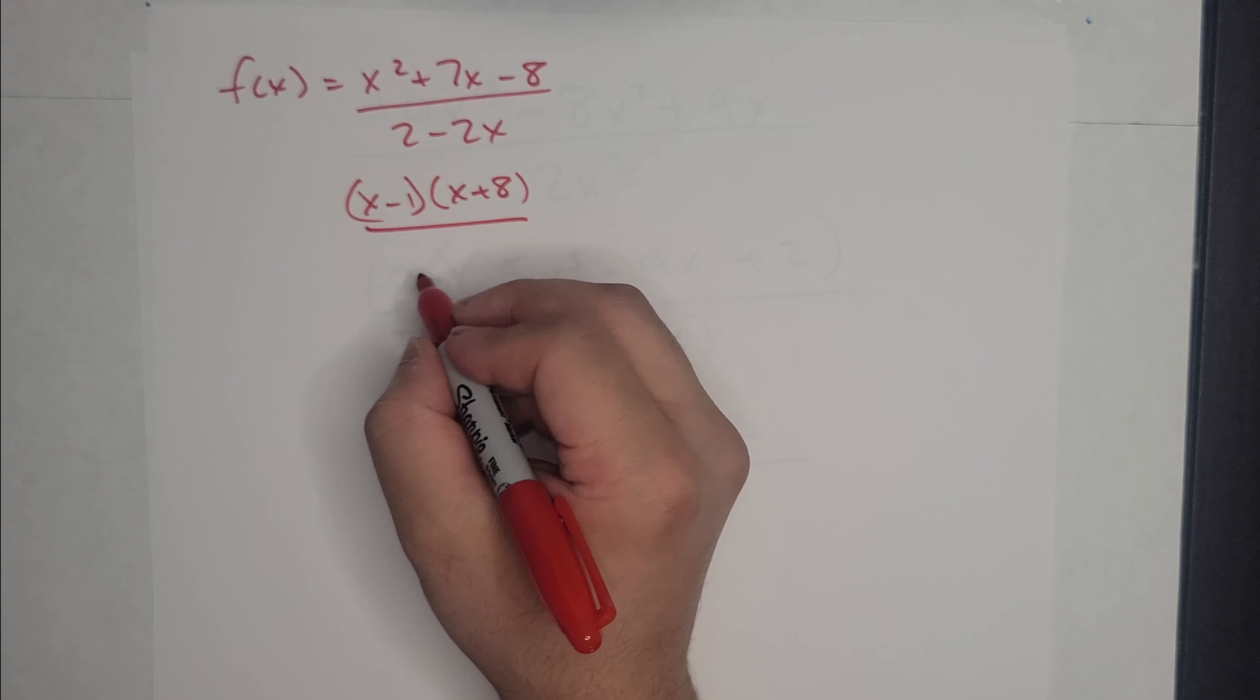And that is the denominator. I can take out a 2 from here. So I'm left with 1 - x. So I notice one thing. If I take out a negative sign from this right here, I can actually flip the signs inside of it. And I'm left with 1 - x on the numerator and denominator. And I'm left with negative (x + 8)/2, which is also negative x - 8 over 2.